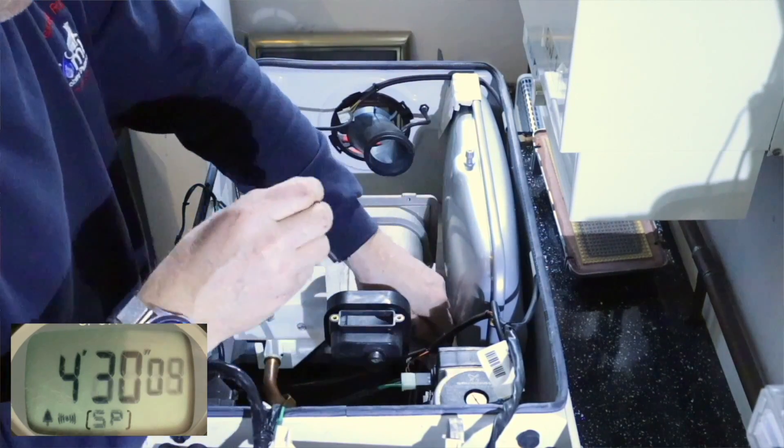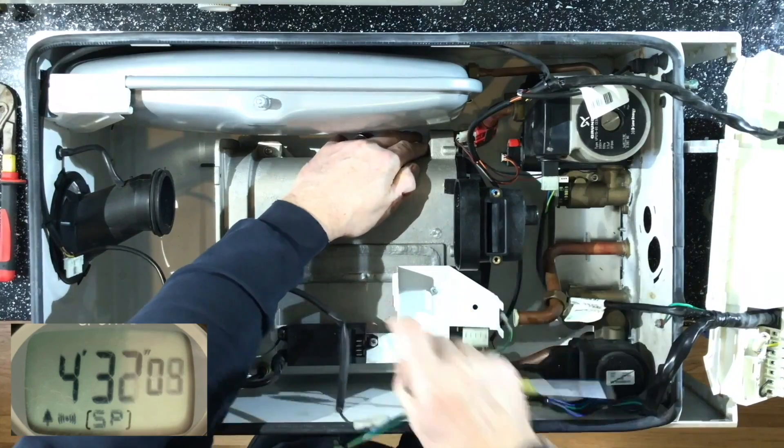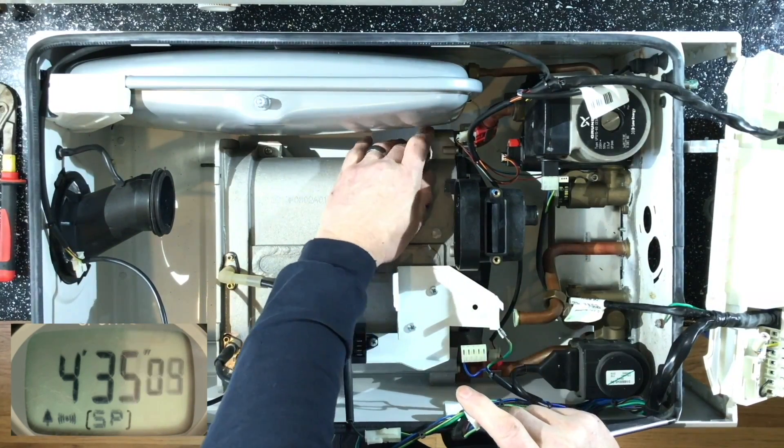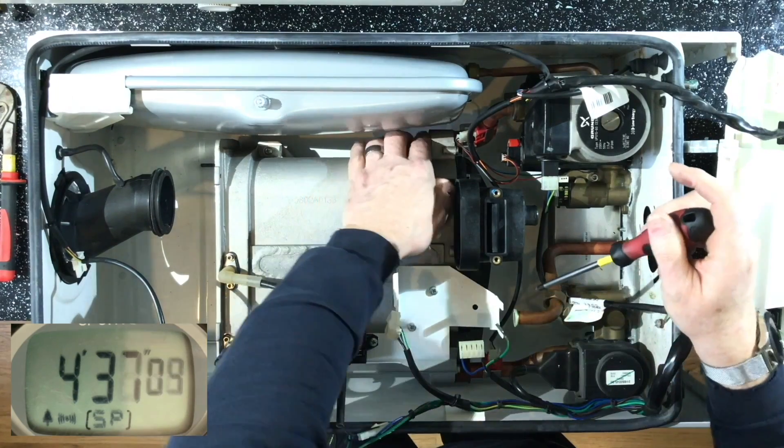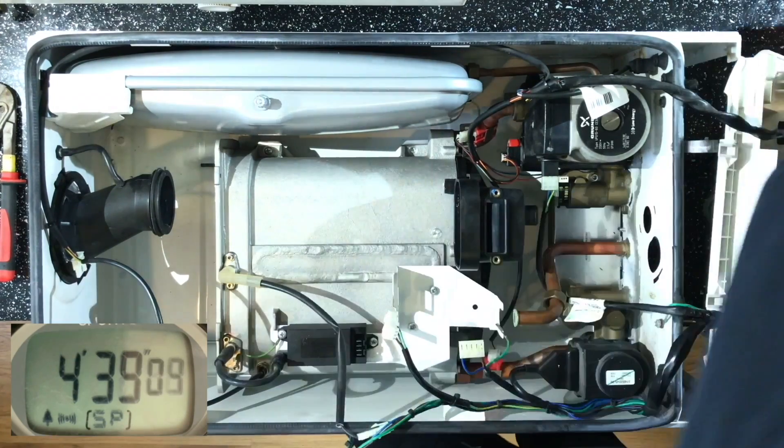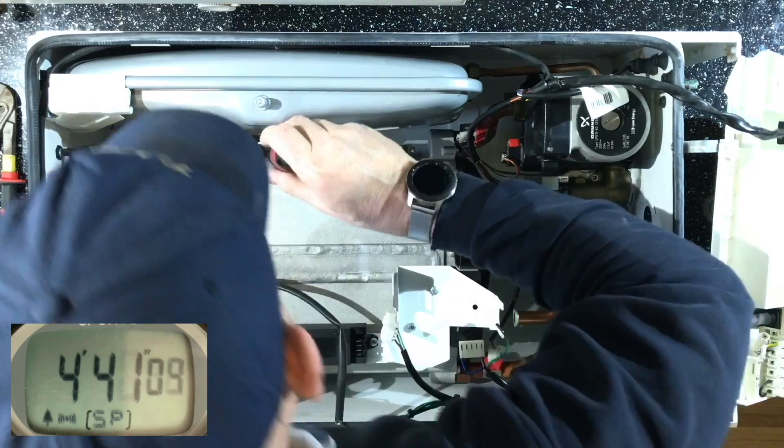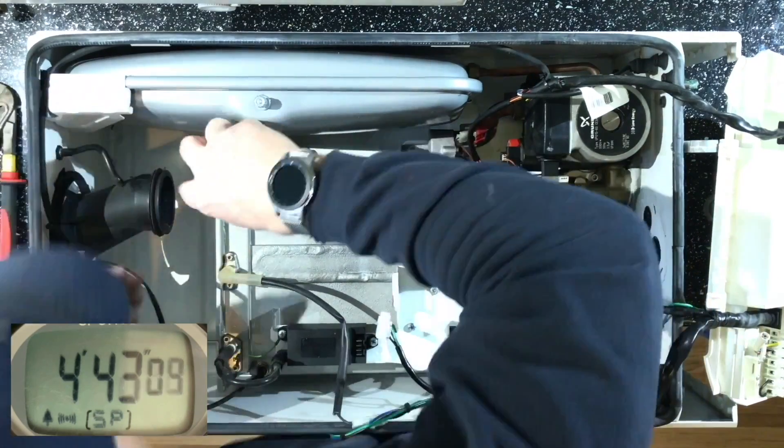So you can now see I'm removing these two retaining screws, which hold the main heat exchanger to the body of the actual boiler. So there are two screws which hold it on this side, and there are two hooks on the back of the heat exchanger which clip into the body of the boiler.